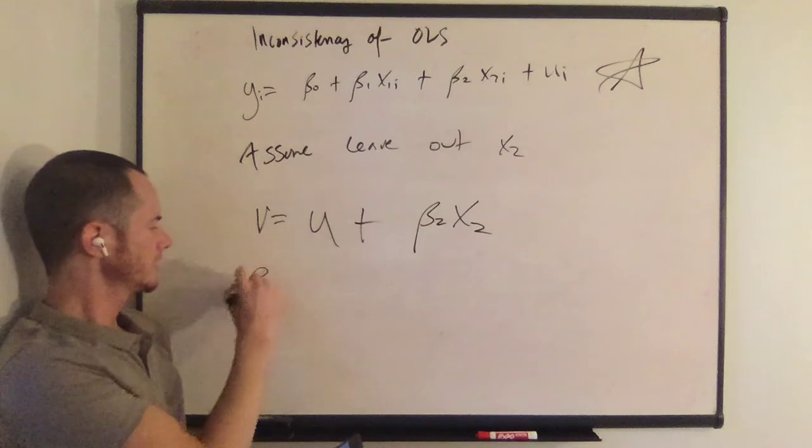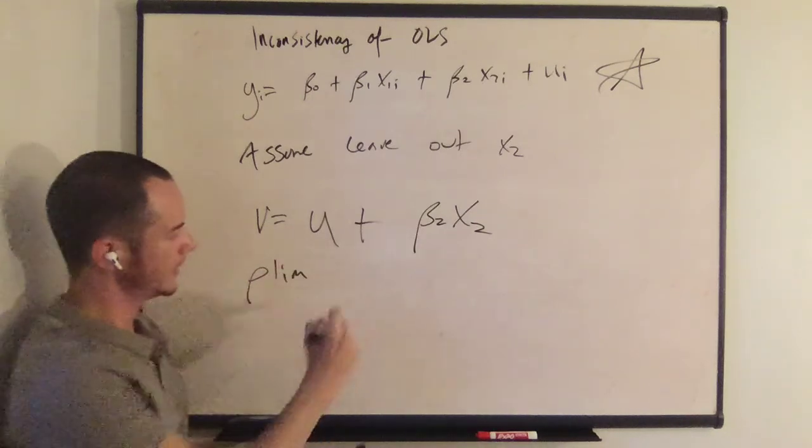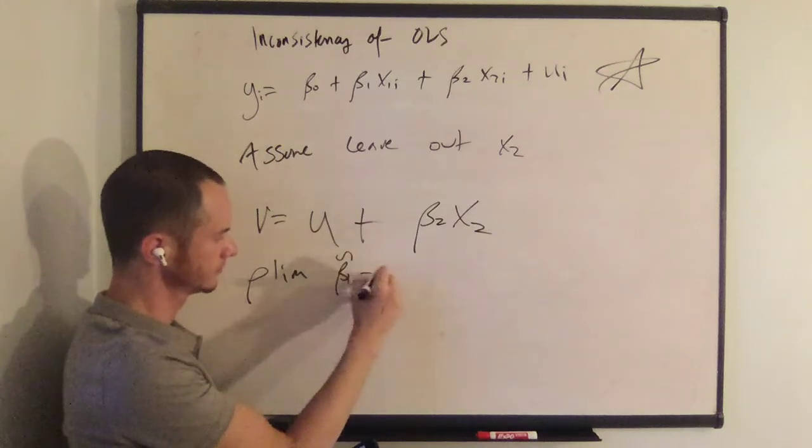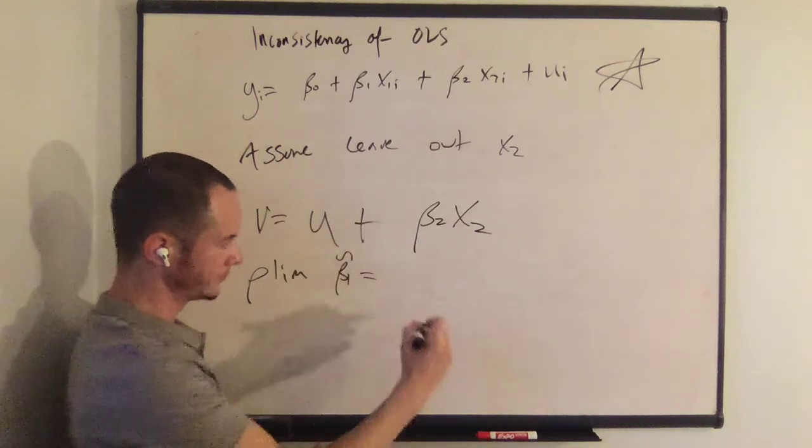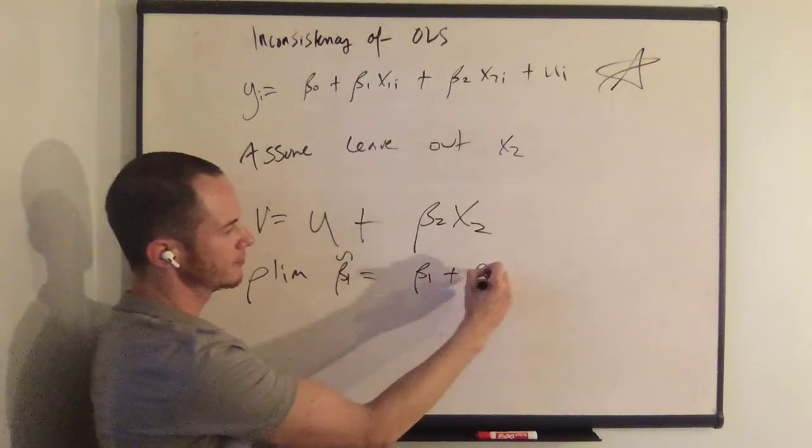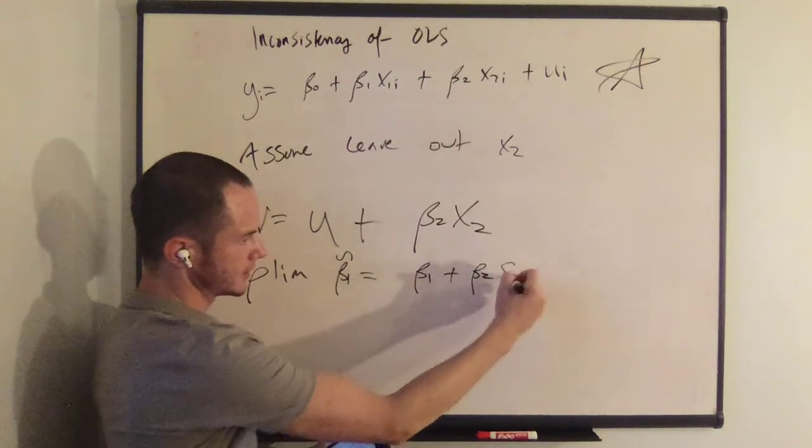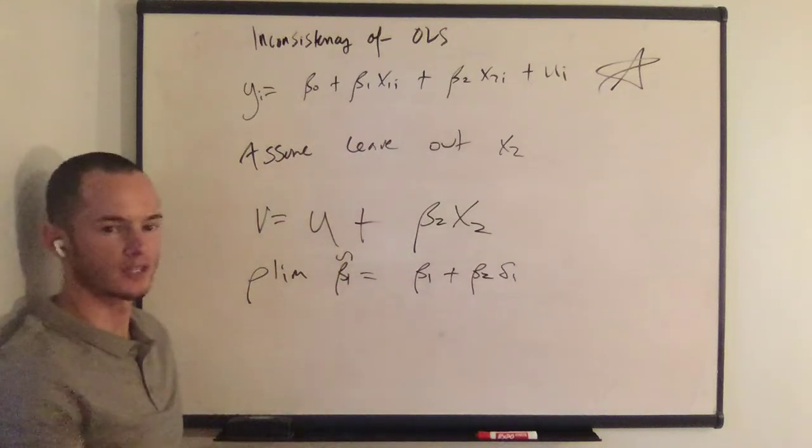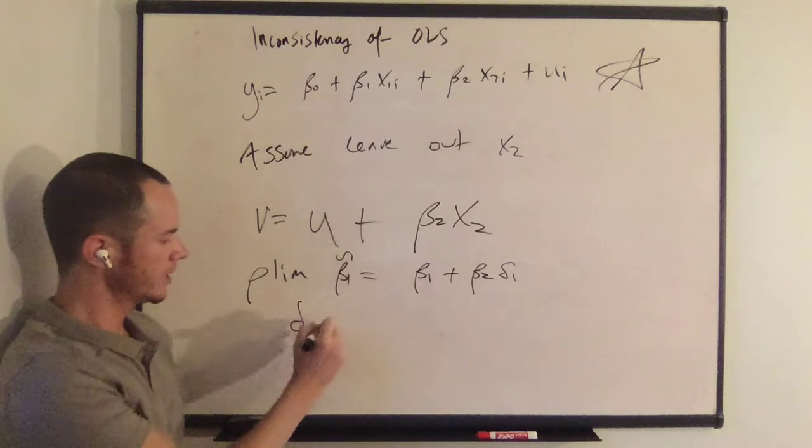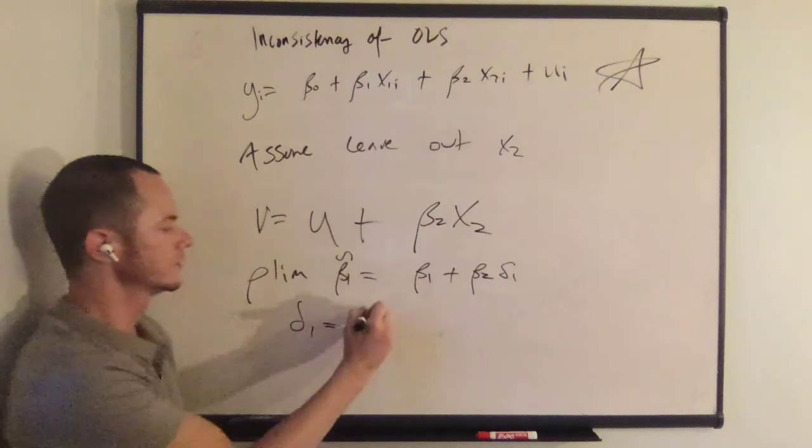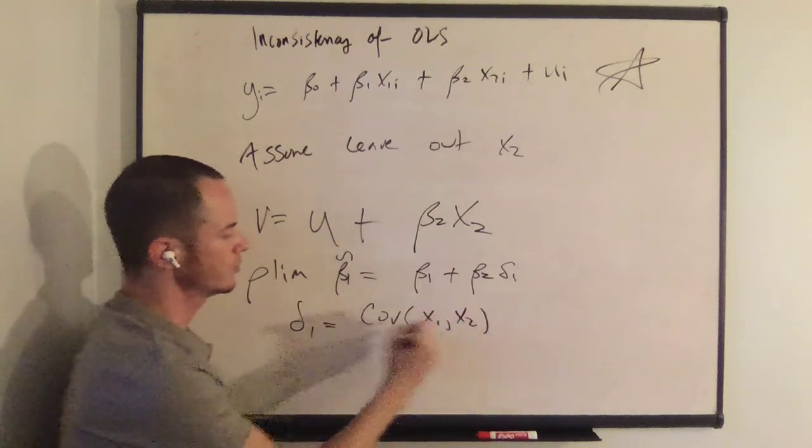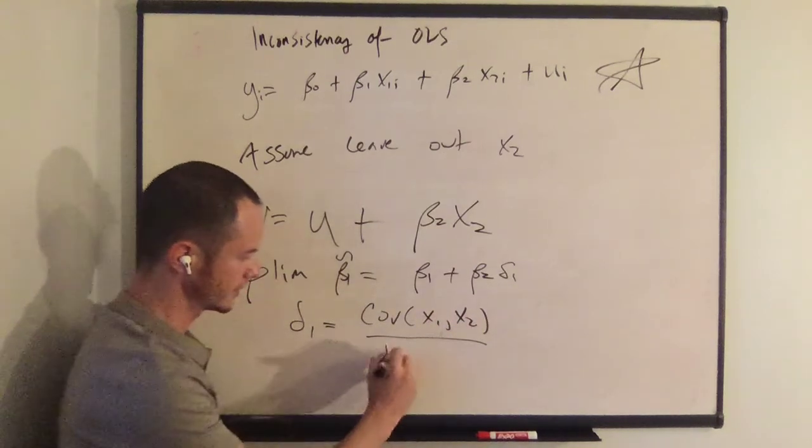And the plim beta 1 tilde is equal to beta 1 plus beta 2 delta 1. And it should look familiar because we have derived this before, where delta 1 is equal to the covariance between x1 and x2 all over the variance of x1.